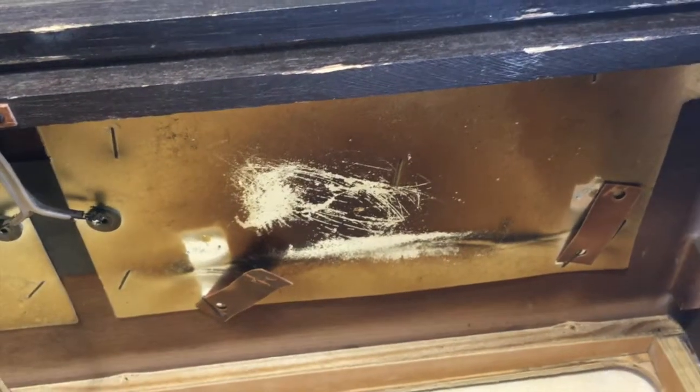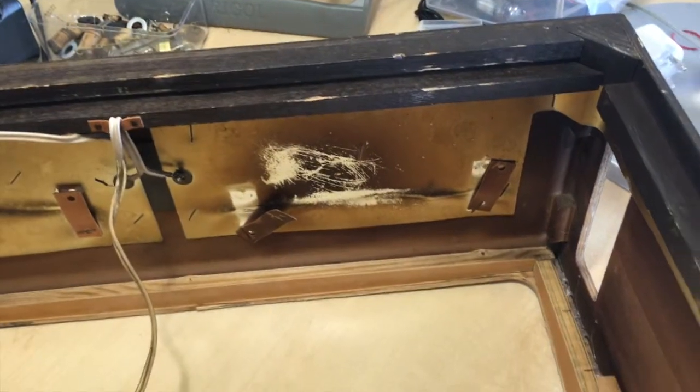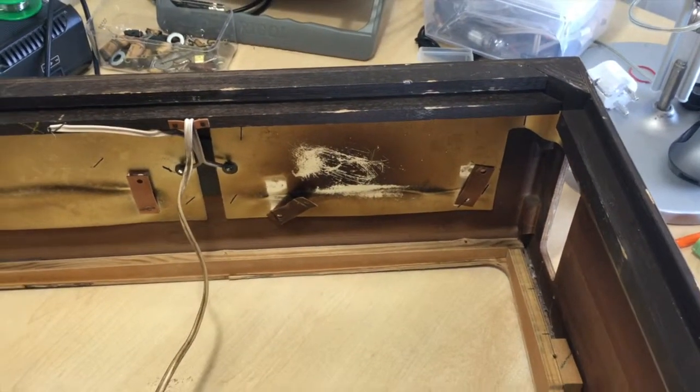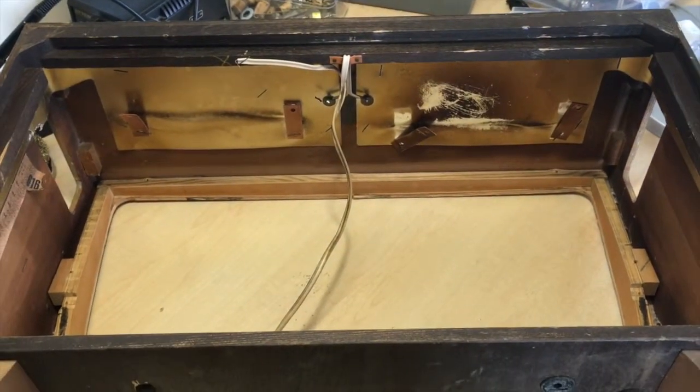And this is directly above where the output tube is, the EL84. So obviously a lot of heat was being dissipated by this tube, which is normal. It's not unexpected. I was just wondering if it's the normal amount of heat or if it's excessive. So I decided a little bit more in-depth look into this would be warranted.